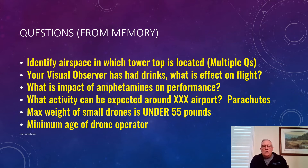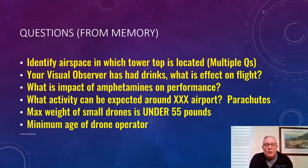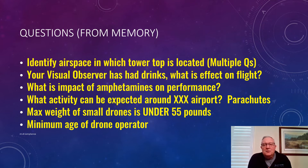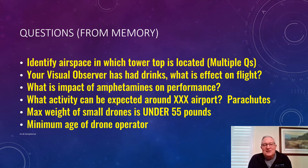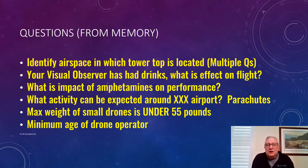Identify the airspace in which the tower top is located — there were multiple questions along those lines. Your visual observer has had drinks — what is the effect on flight? You can't do it. For any questions where the FAA asks about controlled substances or impairment, always go with the most conservative approach. What is the impact of amphetamines on performance? It's degraded — you're not more alert. What activity can be expected around a certain airport? When you look at the chart, you see little parachute symbols. Be familiar with the symbols and the legend in the front of your test book.